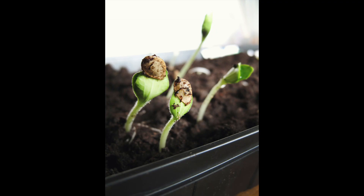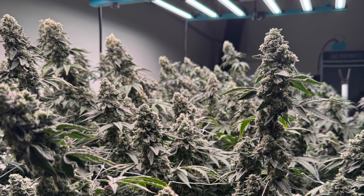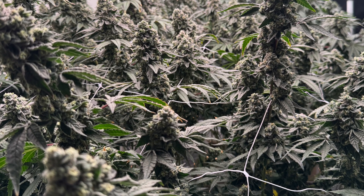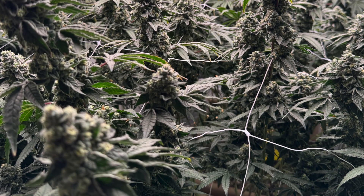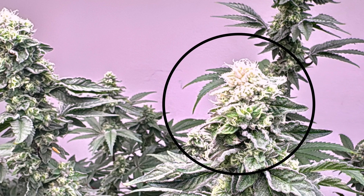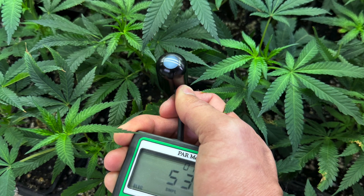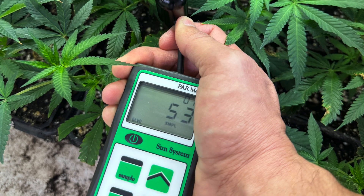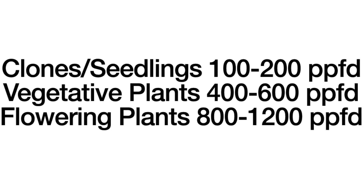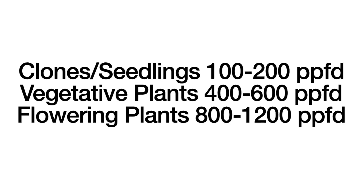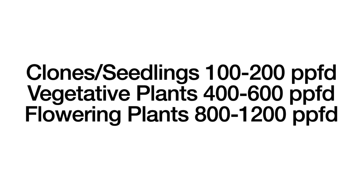I see posts all the time of seedlings that are leggy and falling over, and this is entirely due to a lack of light — a good example of what happens when you don't measure your light output. At low light levels it's easier to differentiate with just your eyes, but it's very hard to tell the difference between 700 and 1,000 PPFD, or know if your plants are the right distance from your light without a meter. Too high light can cause light bleaching, where the bud literally turns white from a lack of chlorophyll. As a general guide, we want 100–200 PPFD for seedlings or clones, 400–600 PPFD for veg plants, and 800–1,200 PPFD for flowering plants, depending on CO2 supplementation.